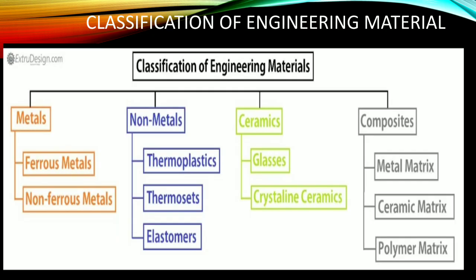Classification of materials: materials can be classified into metals and non-metals. Under metals, we have ferrous metals and non-ferrous metals. Under non-metals, we have plastics — thermoplastic, thermoset, and elastomer (the non-technical word is rubber) — as well as ceramics, which include glasses and crystalline ceramics. Under composites, we have metal matrix composite, polymer matrix composite, and ceramic matrix composite.